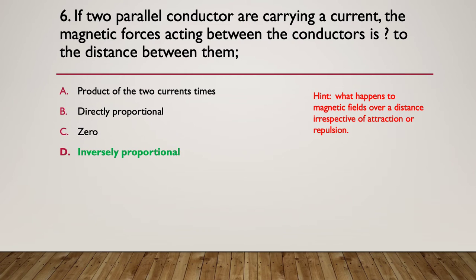The answer was they're inversely proportional. The further you move them apart, or the longer the distance is apart, the strength of the magnetic field reduces by the square or inversely proportional.